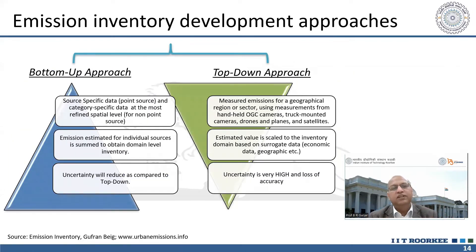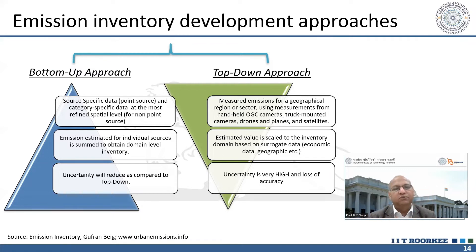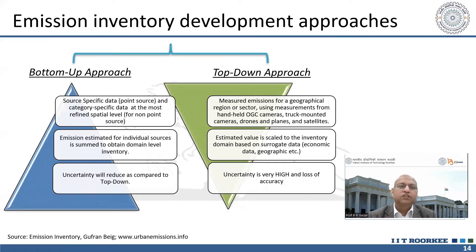There are two broader emission inventory techniques. One is the bottom-up approach, which is quite detailed — source-specific and activity-specific data are needed. For example, for the transportation sector, we need to know how many vehicles there are of different categories: two-wheelers, three-wheelers, four-wheelers, commercial vehicles, and heavy vehicles. As much detailed activity data you can have, along with emission factors for point and non-point sources, the better the emission inventory. There is less uncertainty in this kind of inventory.